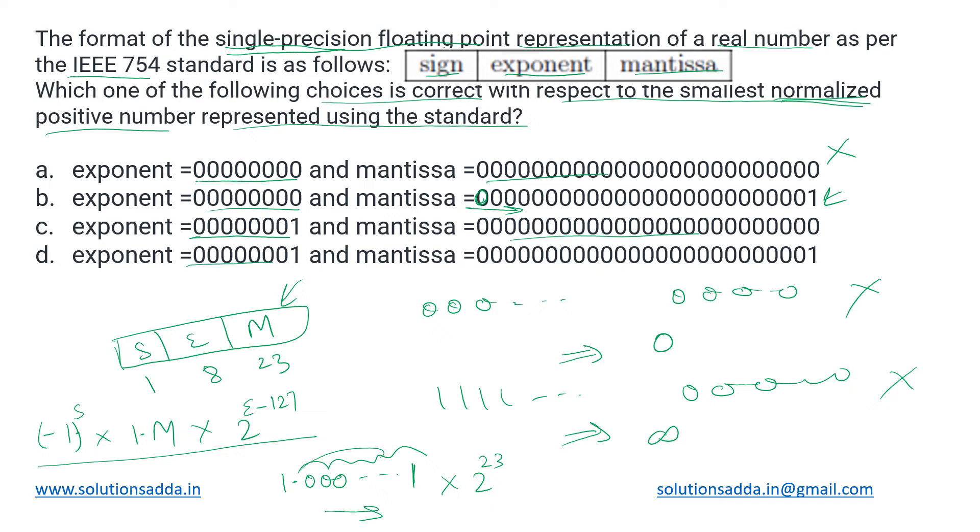Similarly, going for the last one, exponent is one, mantissa is again one at the right hand. We'll definitely discard this one because we cannot skip these many decimal points to reach that one. It will definitely not give the smallest positive, so this one is discarded. We are just left with option C, which is one in the exponent and all zeros in the mantissa.